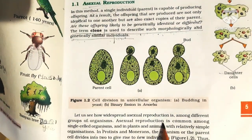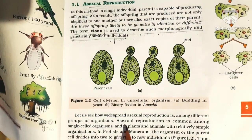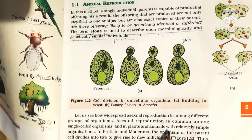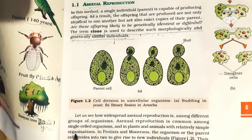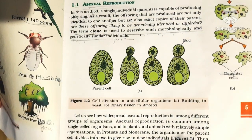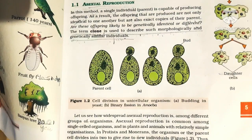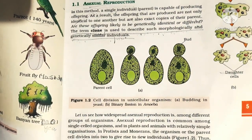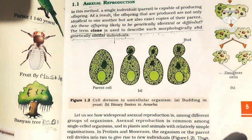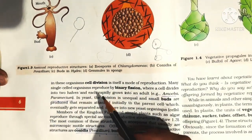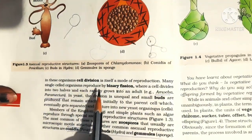Asexual reproduction is common among single-celled organisms — in unicellular organisms, plants, and animals with relatively simple organization. In protists and monerans, the parent cell divides into two, giving rise to new individuals. Cell division itself is the mode of reproduction in these organisms, and many single-celled organisms reproduce by binary fission.